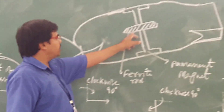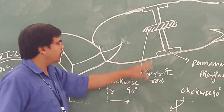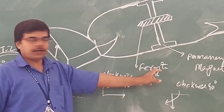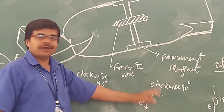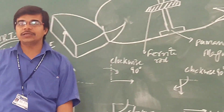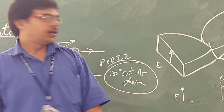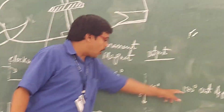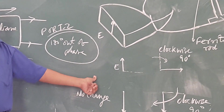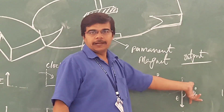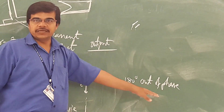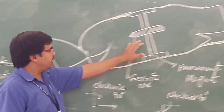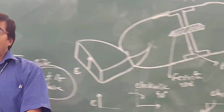After the twist, you have the circular waveguide with a permanent magnet on top. The output is 180 degrees out of phase compared to your input. You get 90 degrees because of the twist, and another 90 degrees because of the ferrite rod covered with the permanent magnet.